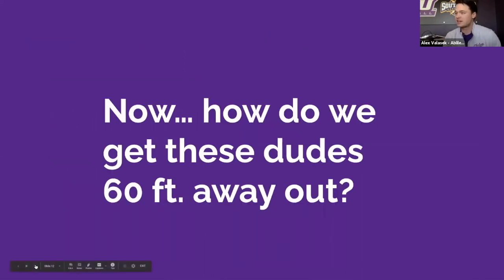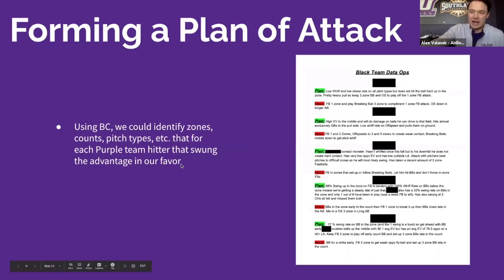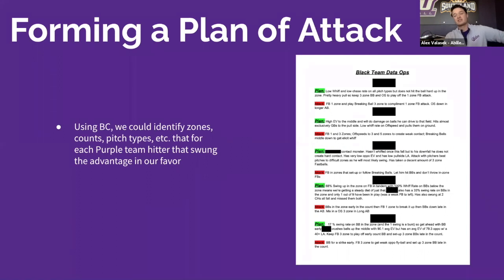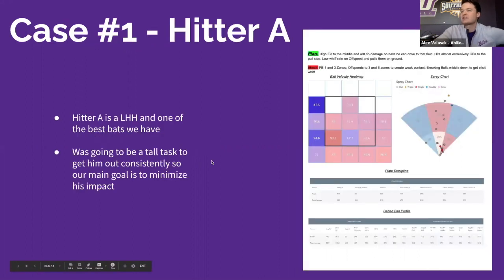Now, how are we going to get these hitters standing 60 feet away out? We're moving on to forming our plan of attack. Just like we can look at the strengths of our staff, we can also flip that and look at ways we can exploit hitters that me and Coach Mumper had to face on the purple team in the fall World Series — finding ways to put ourselves in the advantage for each at bat.